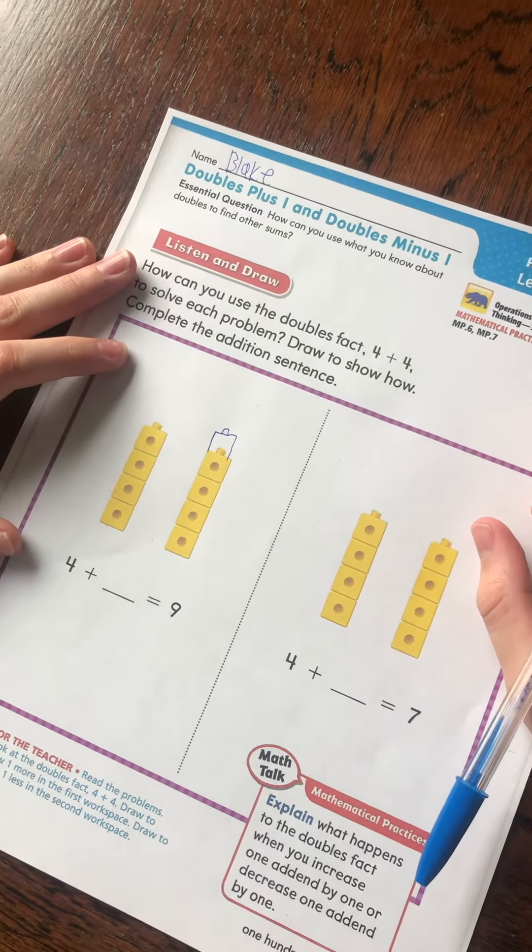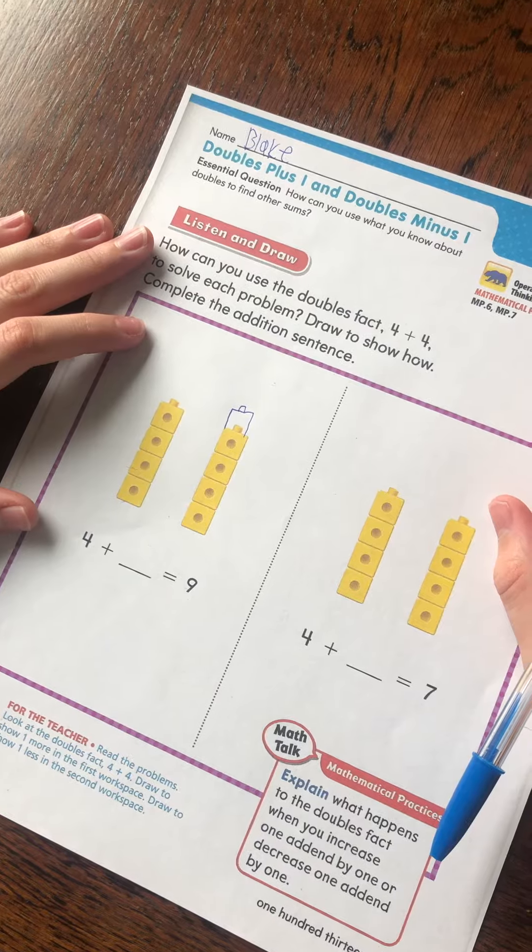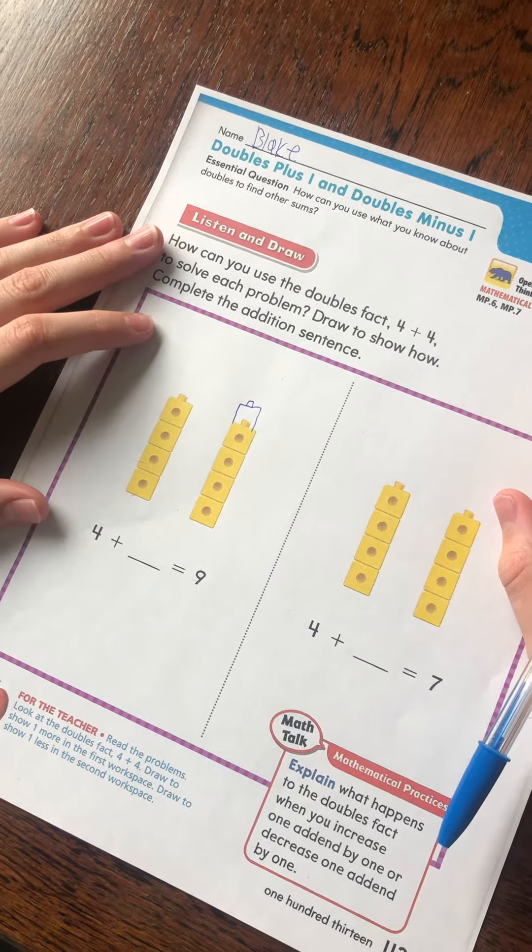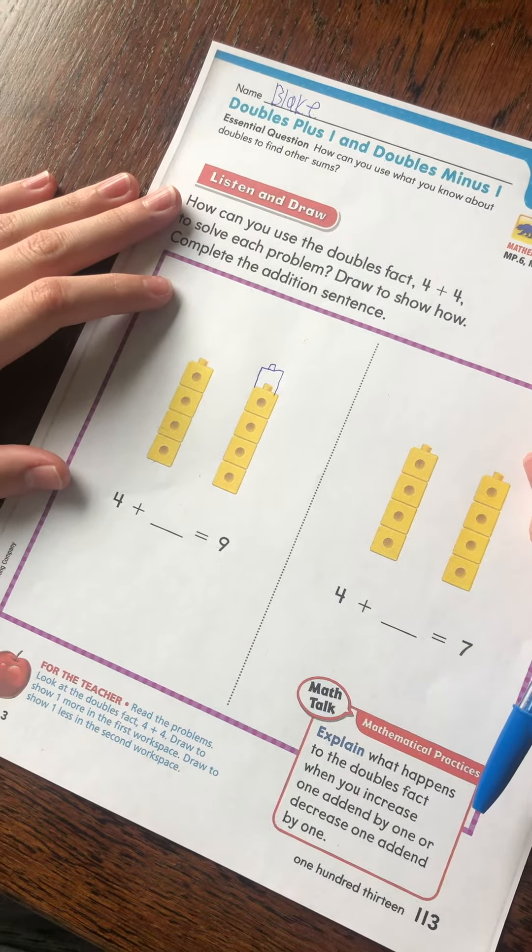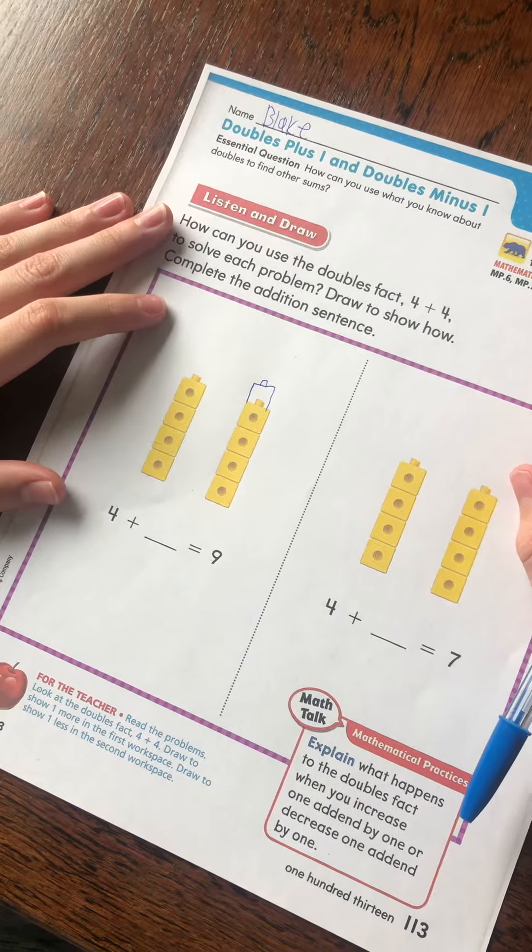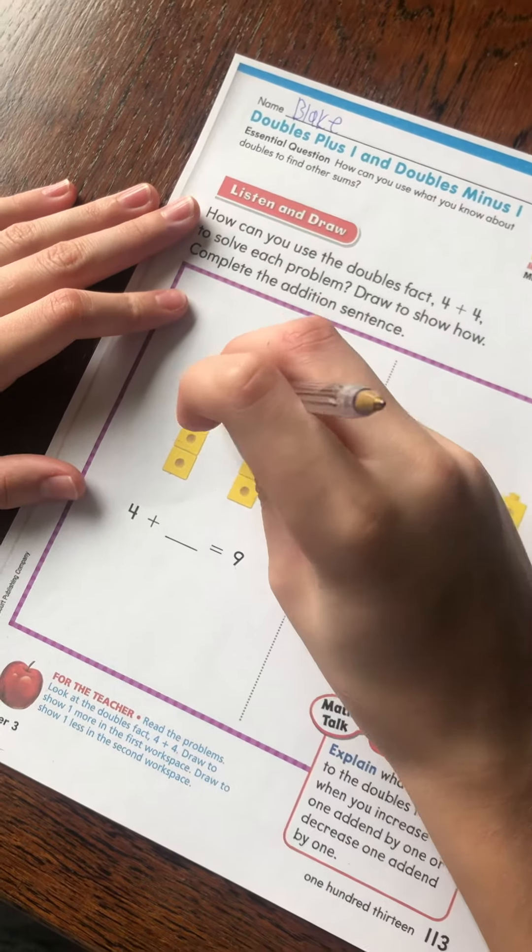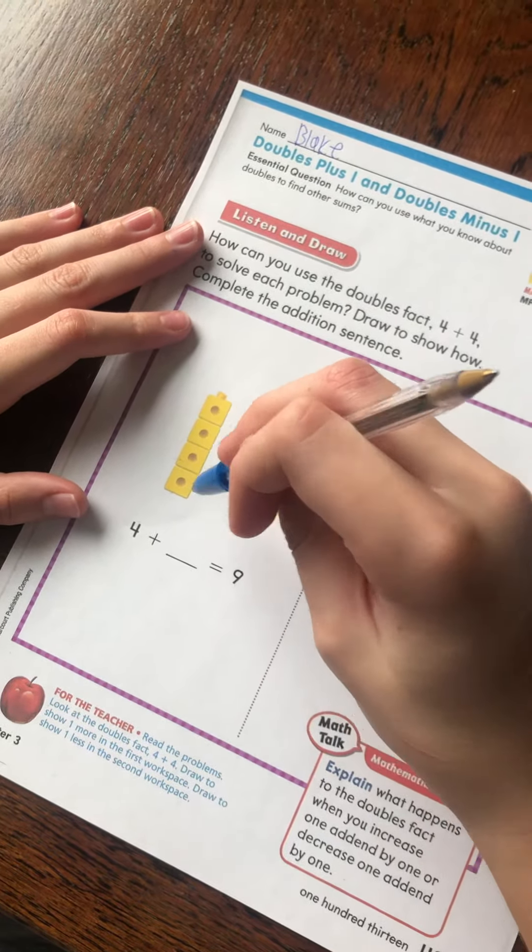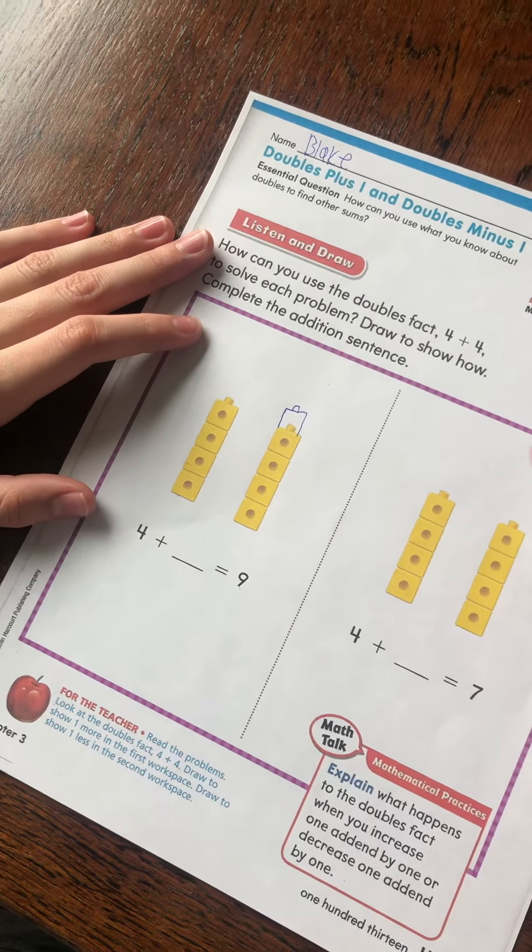Okay, so doubles plus 1. 4 plus 4 is 8. 4 plus 5 is? 9. Count them to make sure. 1, 2, 3, 4, 5, 6, 7, 8, 9.